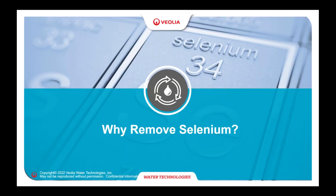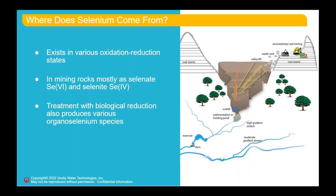Why bother removing selenium? Selenium exists in a variety of oxidation states. In nature, it mostly exists as selenate — selenium plus six — and selenite — selenium plus four. It is commonly found with sulfur ore because selenium is very similar to sulfur. So if you have sulfides in the ground, it's likely you have traces of selenium with the ore, and the chemistry of selenium is actually fairly similar to the chemistry of sulfur.